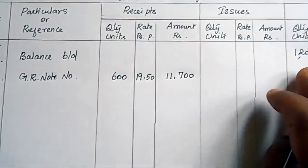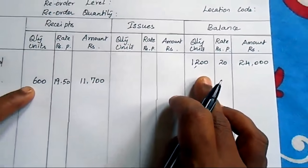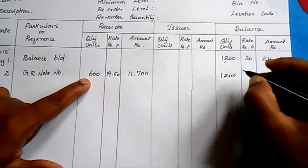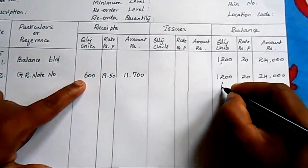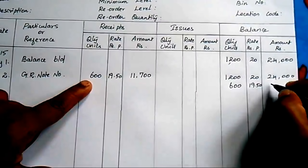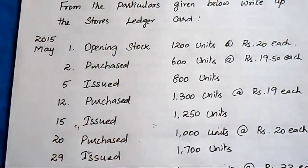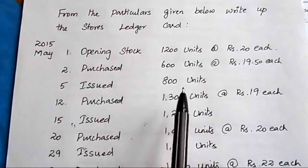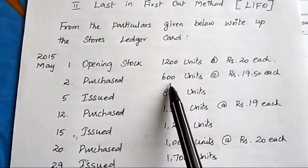After this purchase, update the balance column. Already we had 1200 units at ₹20 = ₹24,000. Now we have purchased an additional 600 units at ₹19.50 = ₹11,700. Total balance: 1800 units across two lots.